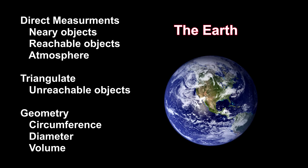In this chapter, we have used direct measurement, triangulation, and geometry to find out how far away things are here on Earth.